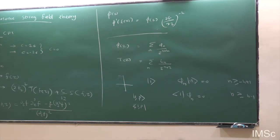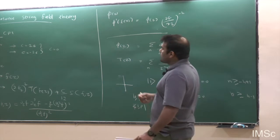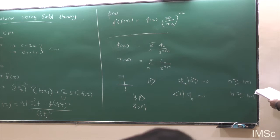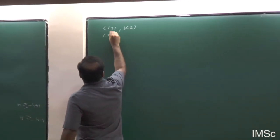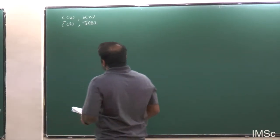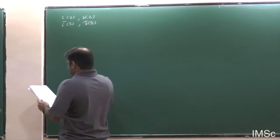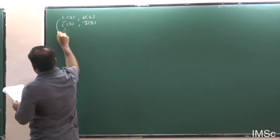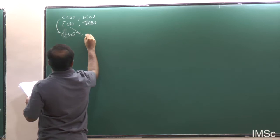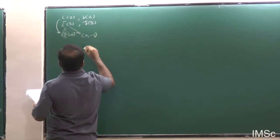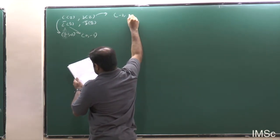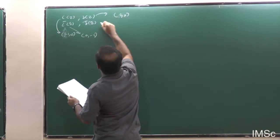The ghost sector consists of two kinds of fields — these are the ghosts for the reparameterization symmetry on the world sheet. You have fields C(c) and B(c), and their conjugates. C(c) is a primary field having dimension (−1, 0) and C̄(c̄) has dimension (0, −1). Similarly, B(c) has dimension (2, 0) and B̄ has dimension (0, 2).